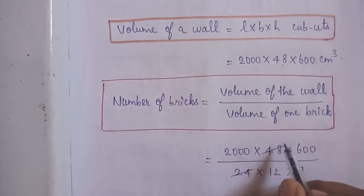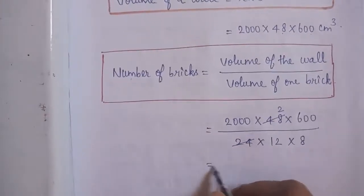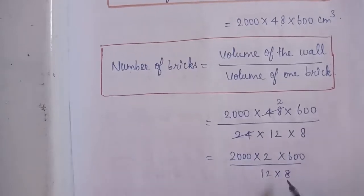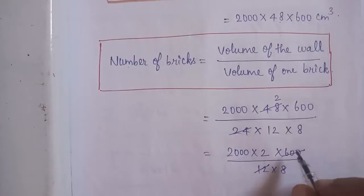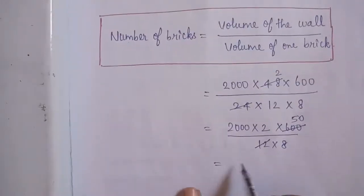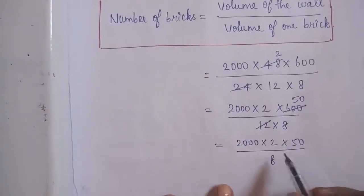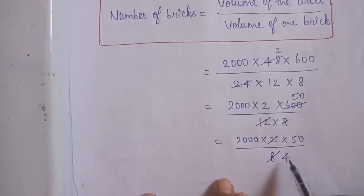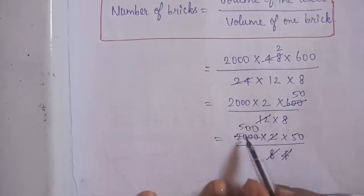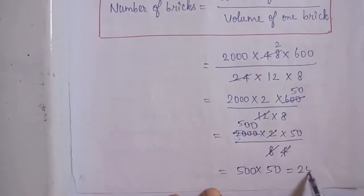Now simplify: 24 into 2 is 48, so we get 2000 into 2 into 600 by 12 into 8. Cancelling 12 and 600: 12 fives are 60, so you get 50. That gives 2000 into 2 into 50 by 8. Cancelling using 2: you get 4, then cancelling 4 and 2000 gives 500. So 500 into 50 = 25,000.